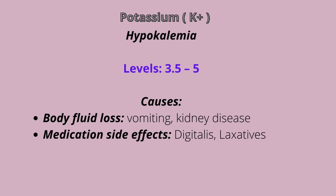Potassium levels are between 3.5 and 5.0 — anything below 3.5 is hypokalemia. Causes of hypokalemia are normally body fluid loss, which could involve vomiting, NG suctioning, kidney disease, dietary deficiency, alkalosis, and diarrhea. Medication adverse effects such as corticosteroids, diuretics, digitalis, and Lasix can also cause hypokalemia.